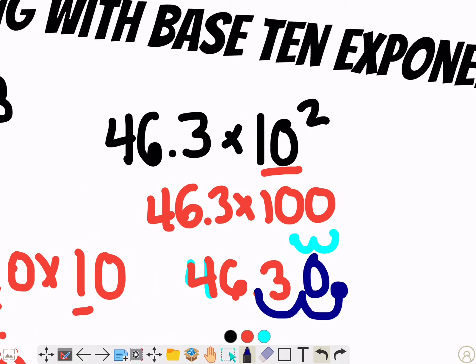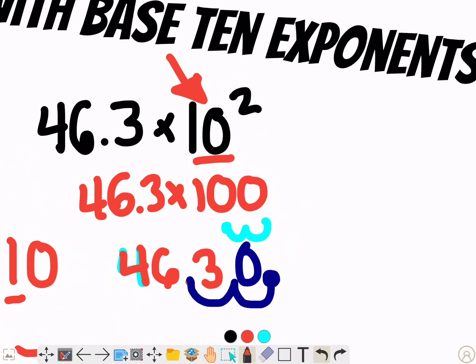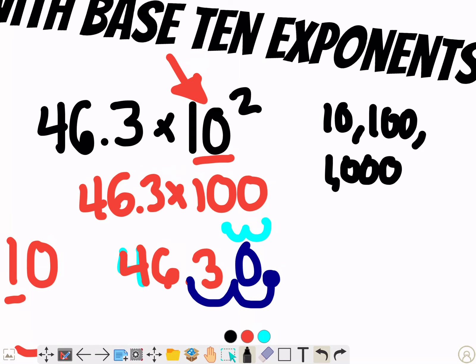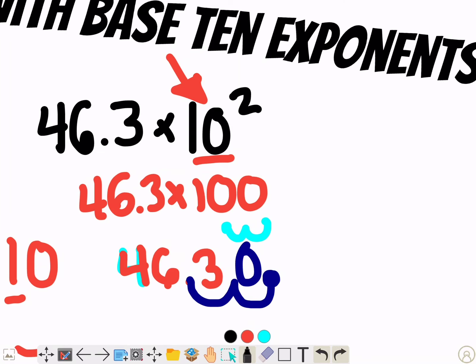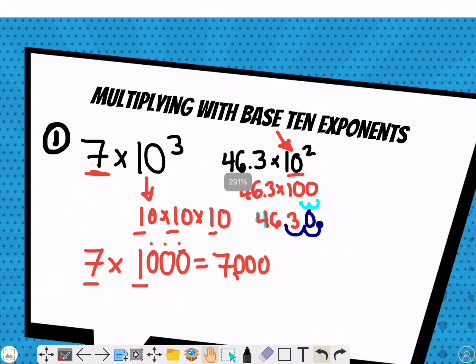Whenever you're multiplying with base ten exponents, you have to change this number into a number you actually know how to work with. Luckily it's usually going to be ten, a hundred, a thousand, ten thousand, whatever the case may be. They're pretty easy numbers to work with, but you have to figure out how much it is and how many zeros you need.